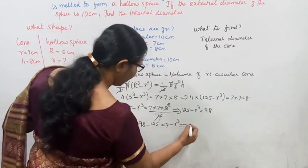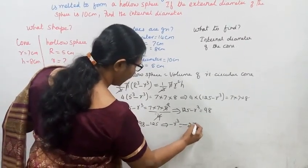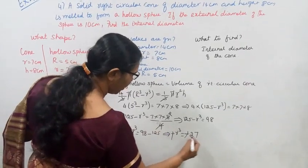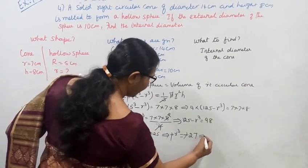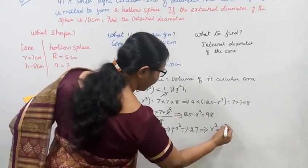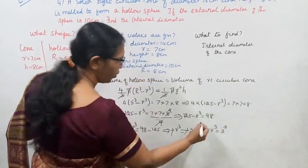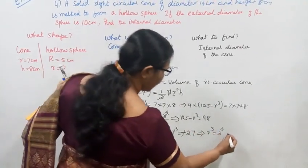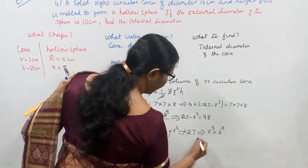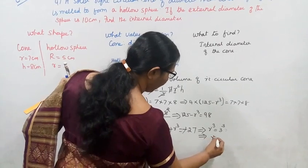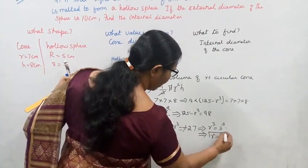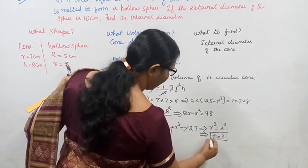Minus r³ = minus 27. The negatives cancel, so r³ = 27 = 3³. Therefore r equals 3. Small r equals 3.